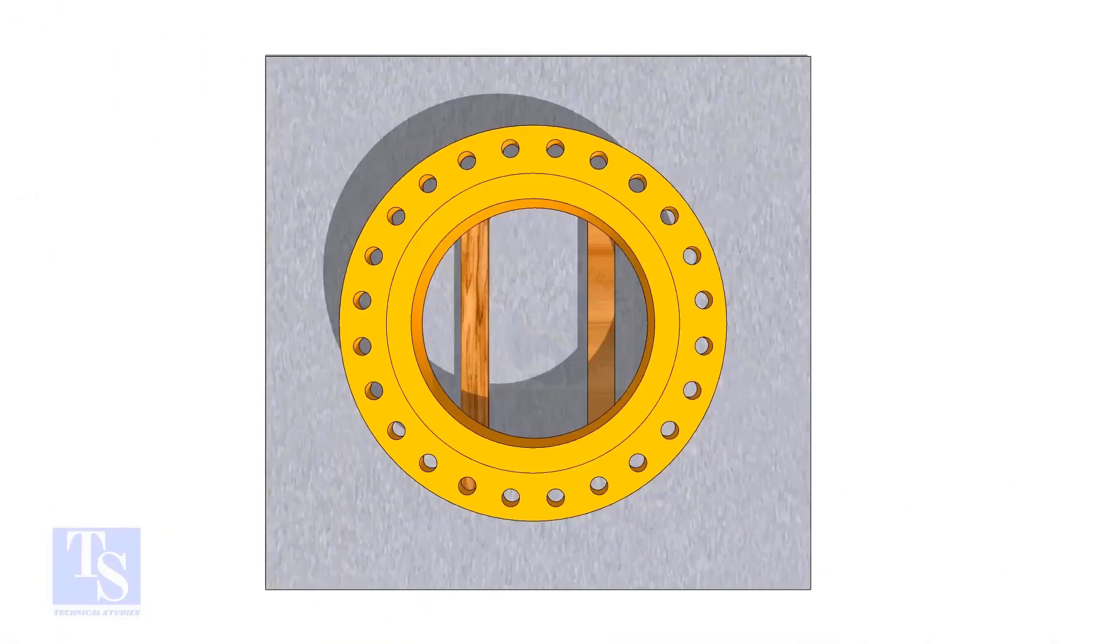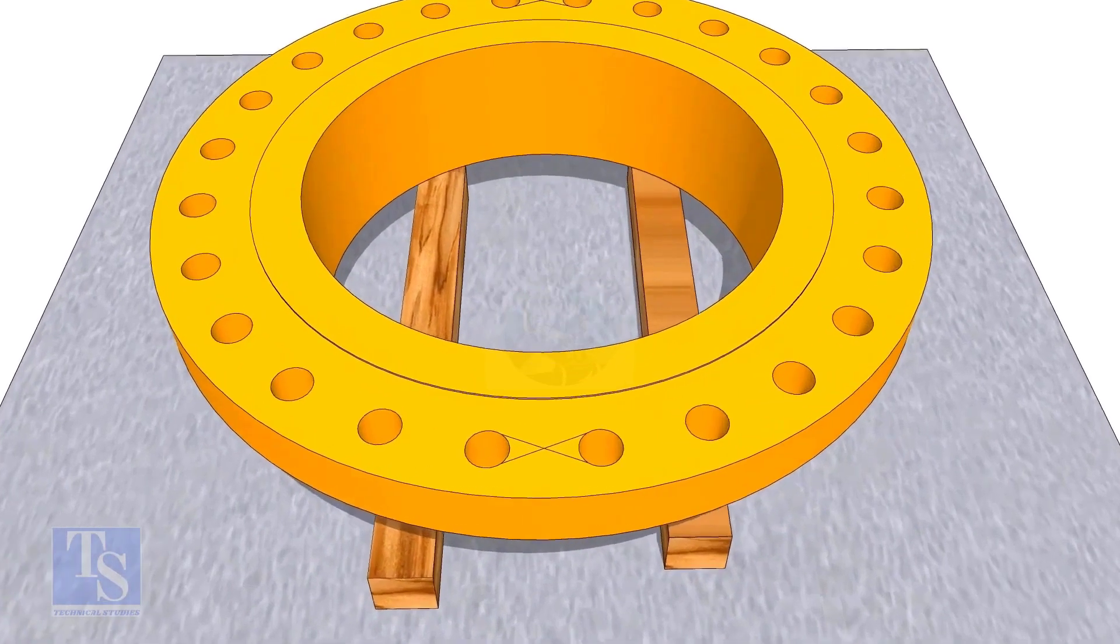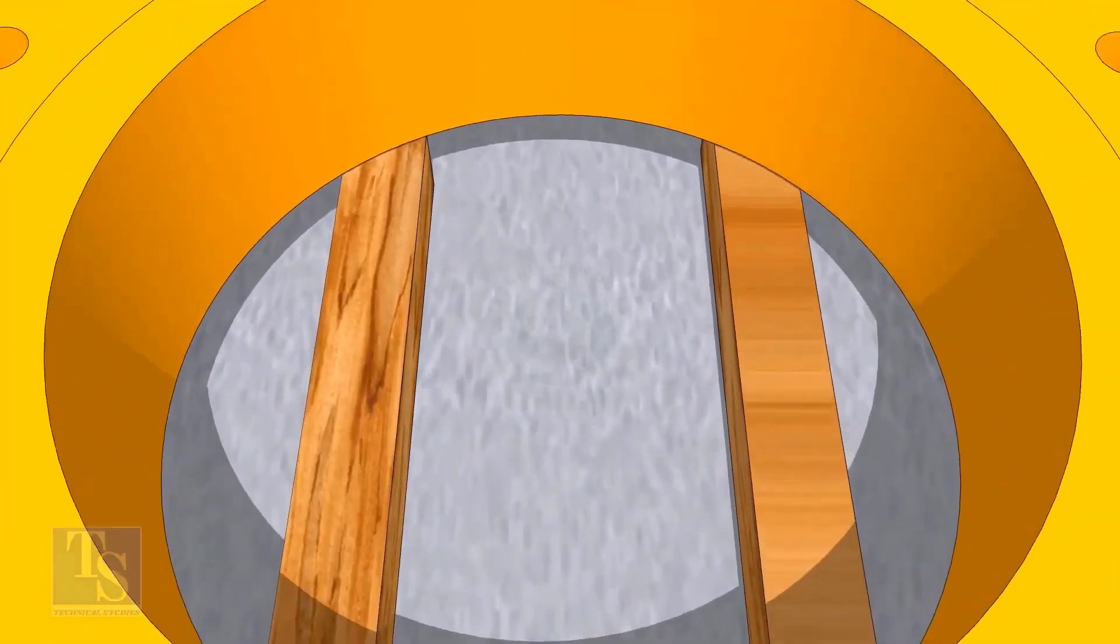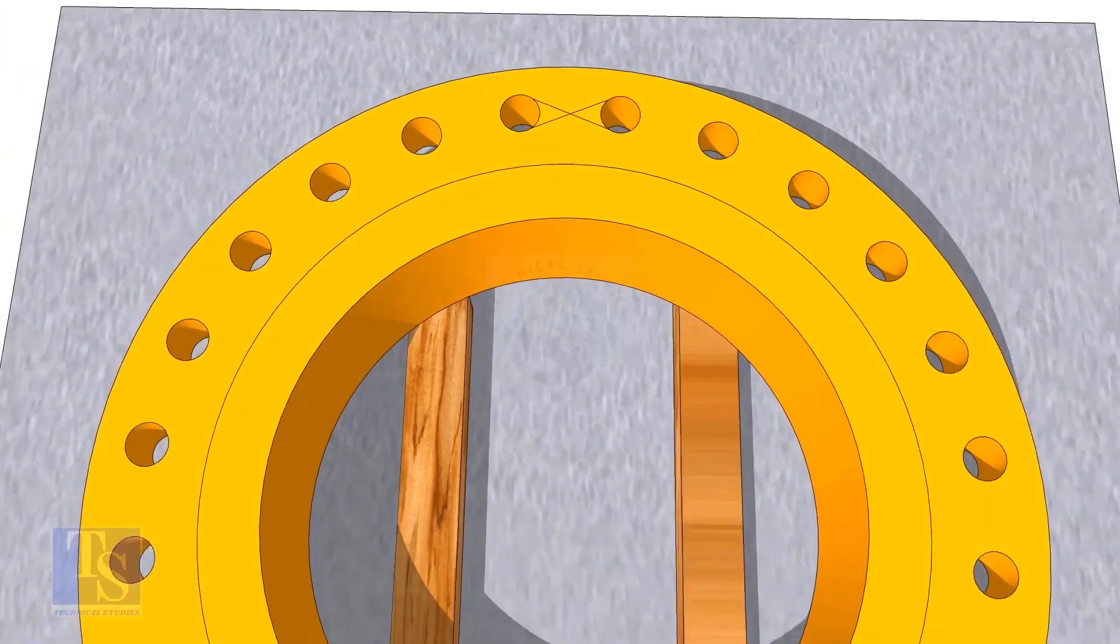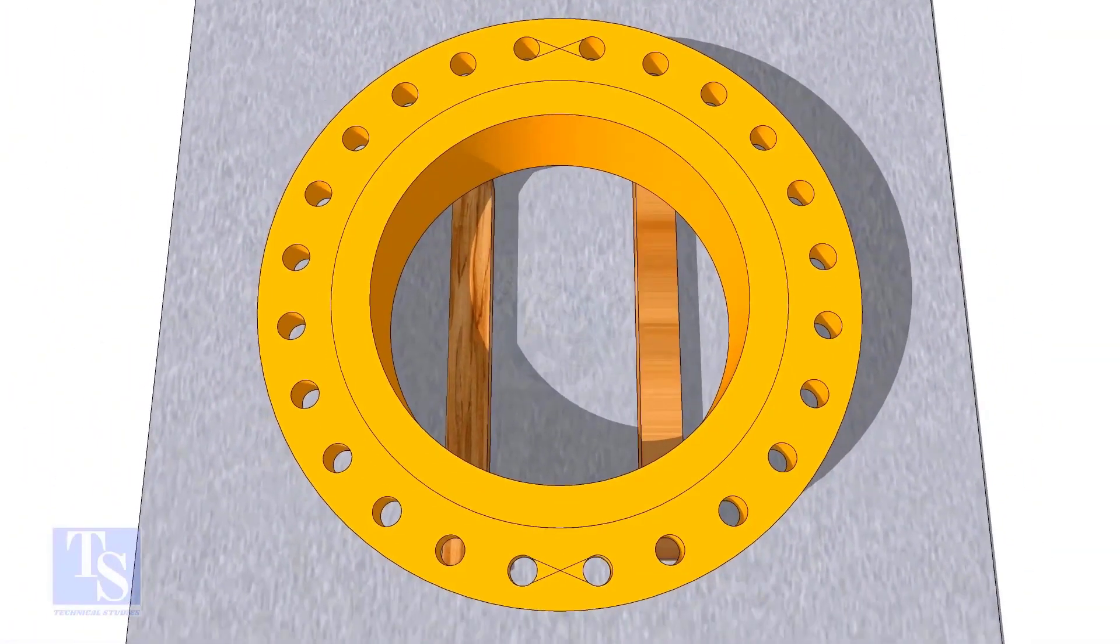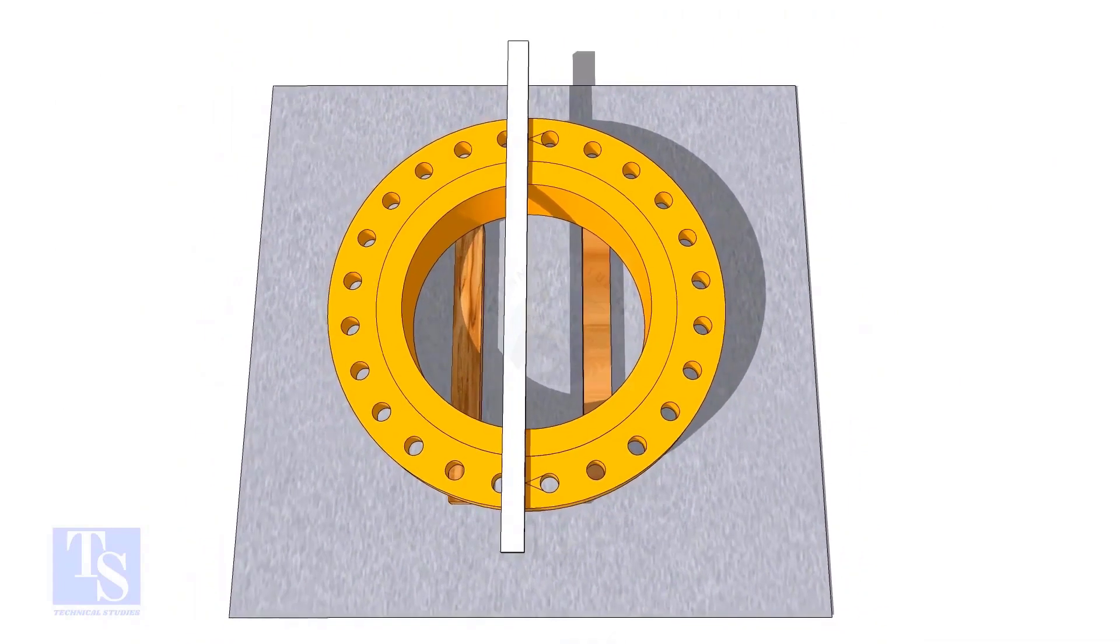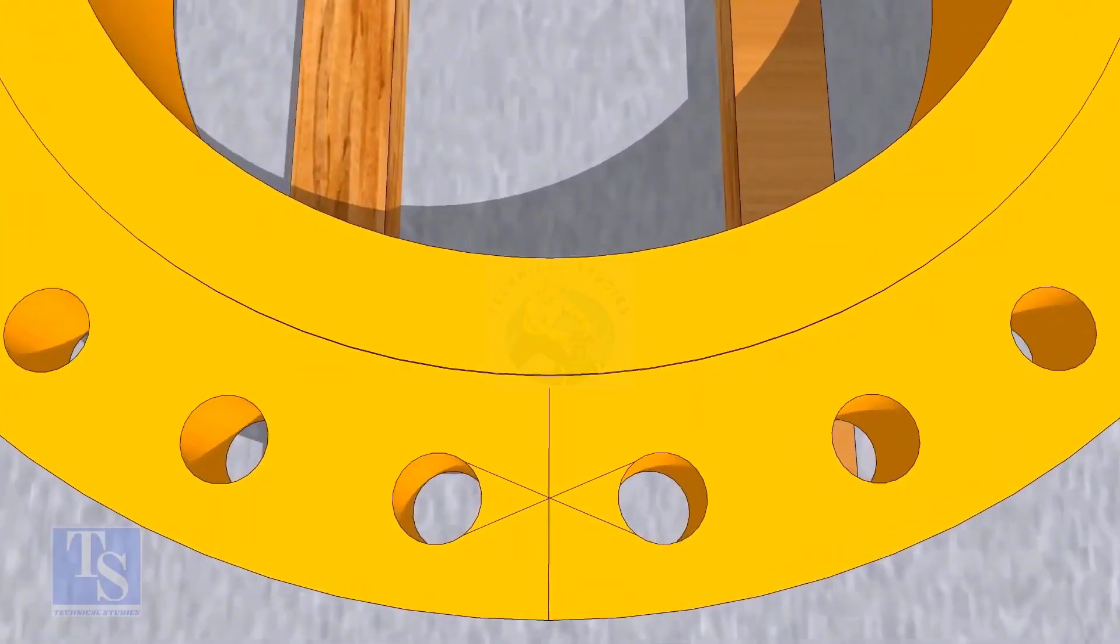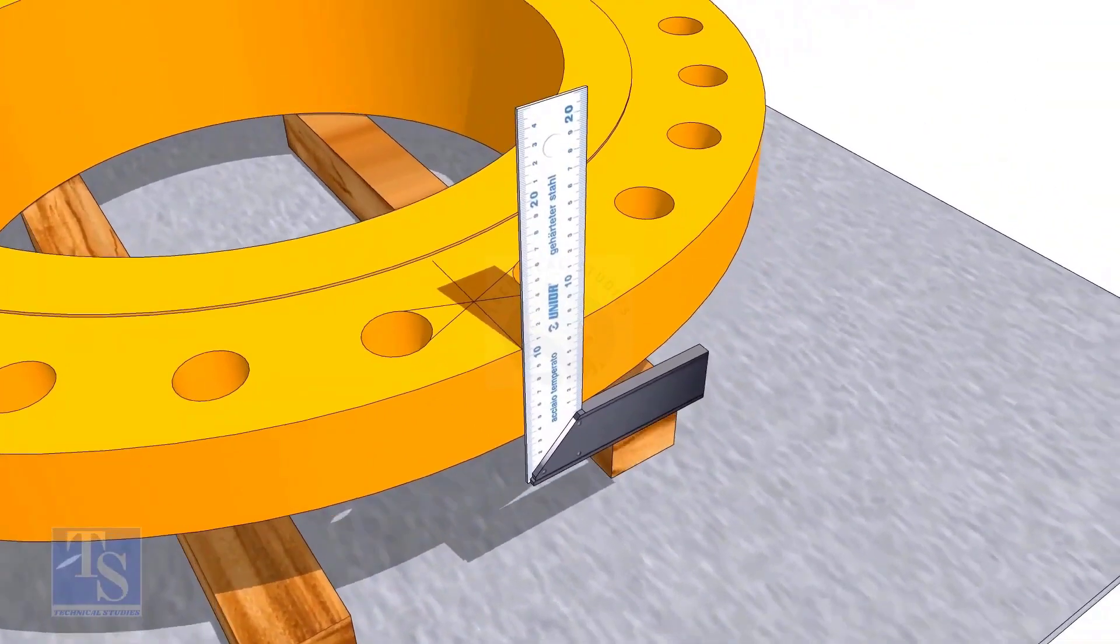In the second method, you need to mark the center line of the flange. Draw tangential lines on two adjacent holes on opposite sides. Draw a line as shown. Transfer the center line to the side of the flange.